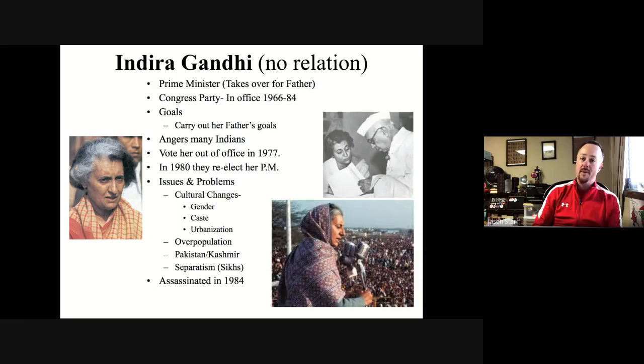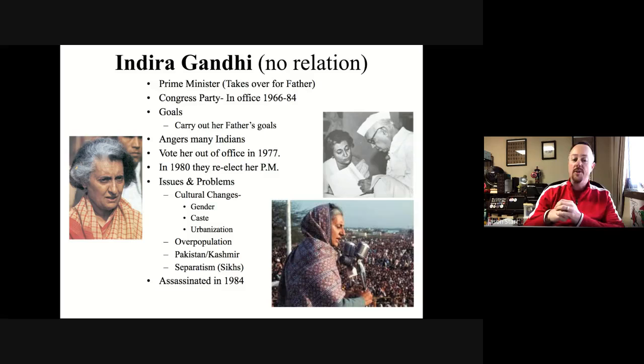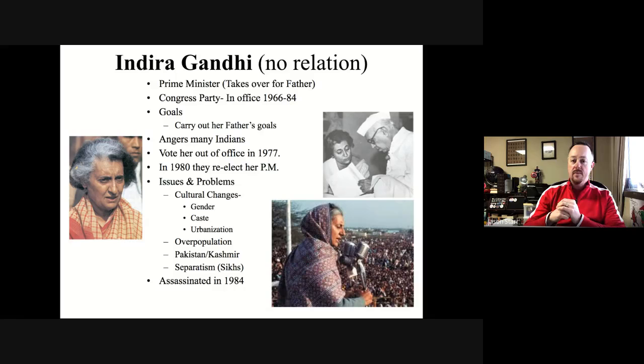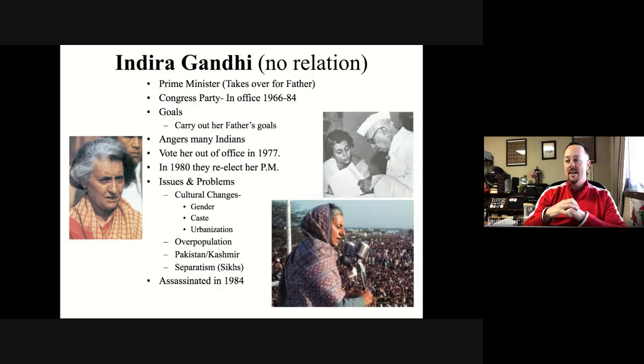Overpopulation also became a serious problem during Indira Gandhi's time. Under her government, sterilization programs were introduced to control population growth — for example, men who committed certain crimes could be sterilized. These policies were not always popular. Pakistan and Kashmir remained ongoing issues, and the northwest region had been unstable for a long time. Tensions between Sikhs and Hindus grew larger, with separatism becoming a bigger and bigger issue.